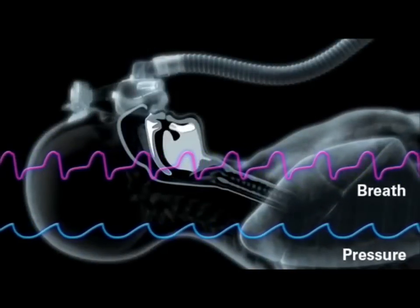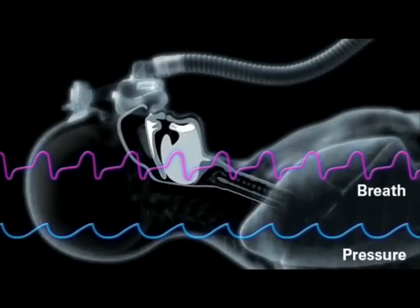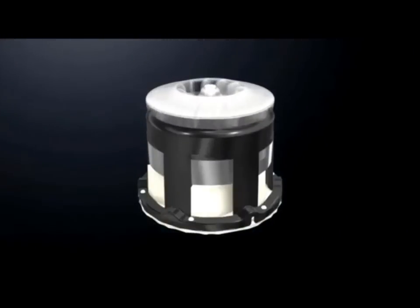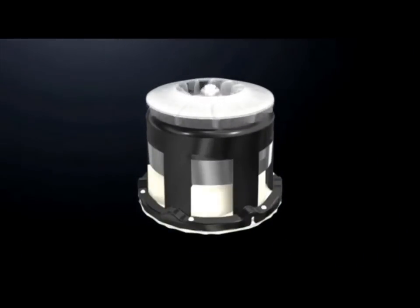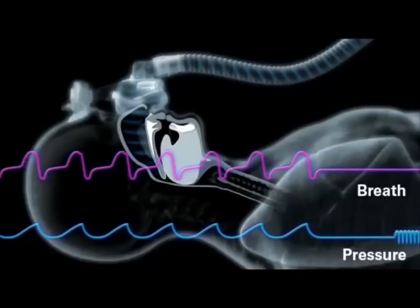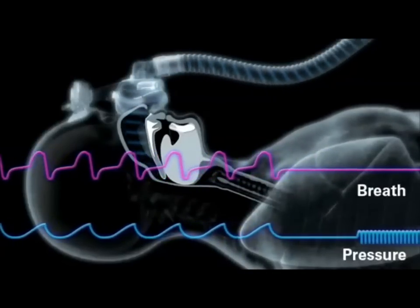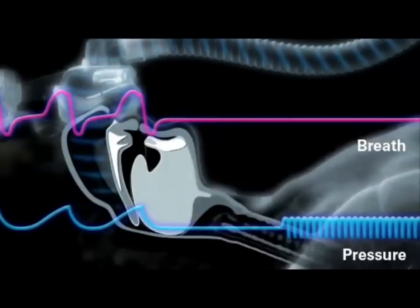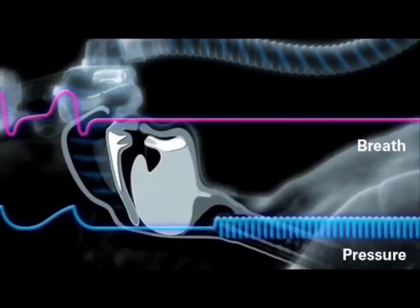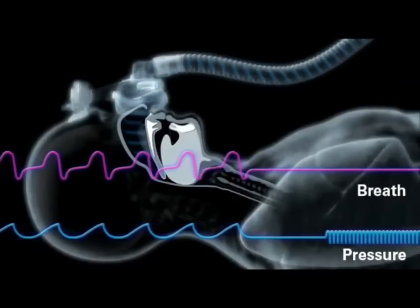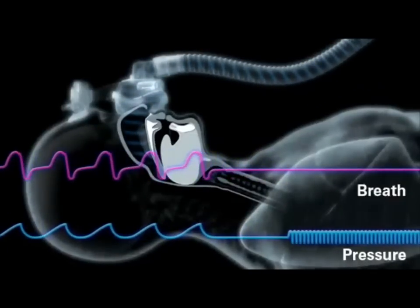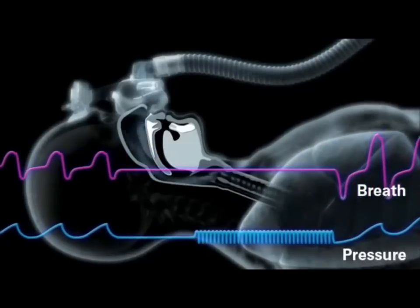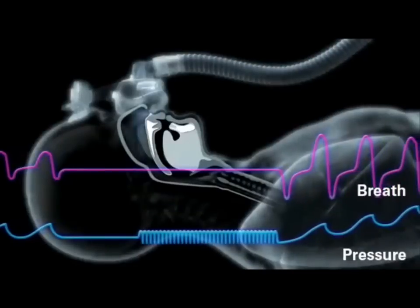ResMed's enhanced Autoset algorithm can detect whether an apnea is obstructive or central. The device generates small amplitude pressure oscillations that flow down the tube and into the mask. The algorithm compares this pressure to its flow response. If the airway is closed, there will be little or no flow, and fluctuations in mask pressure will be barely diminished. The algorithm will then increase treatment pressure in proportion to the severity of the event.